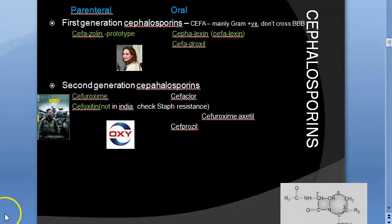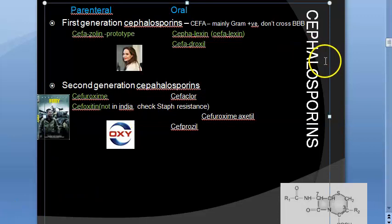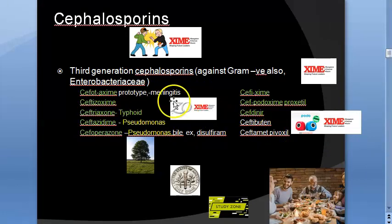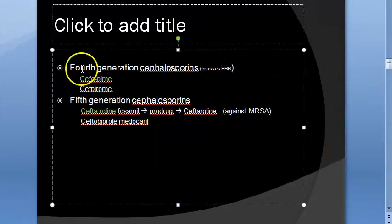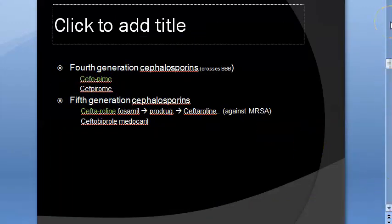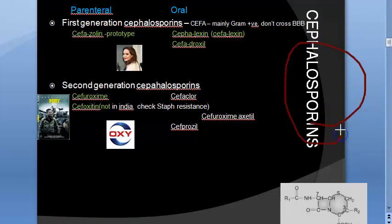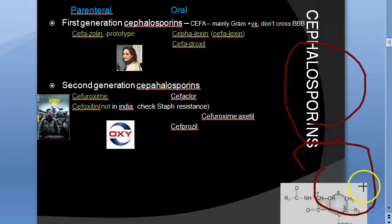Hello, so if you're wondering how to remember the names of cephalosporins, which is very difficult, let us try some clues. We have five generations in cephalosporins: first, second, third, fourth, and fifth generation. Cephalosporins are beta-lactam antibiotics — they contain a beta-lactam ring.